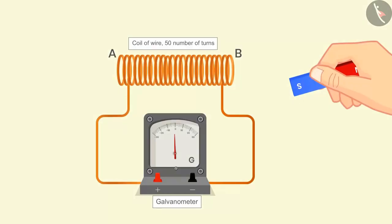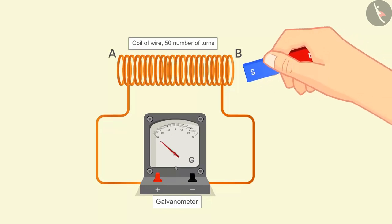In the third case if we move the south pole of the magnet towards the coil then the deflection will be opposite than it was in case 1.